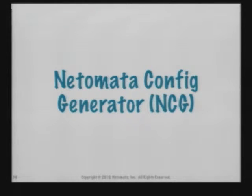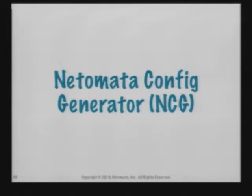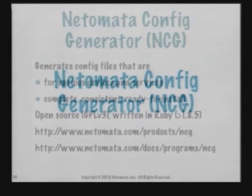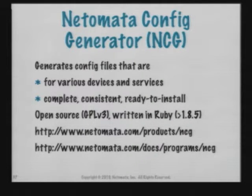I'm going to talk briefly about NCG — what it is, what it does, why it might be interesting. Then I'll go back to automation in general, and at the end of this talk, with whatever time I have left, I'll go into more detail about NCG. I didn't want to hijack this general talk into a sales pitch for my open source product. NCG generates config files for various devices and services — whatever devices and services you want to give it templates for — that are complete, consistent, and ready to install. NCG doesn't do anything about actually installing those configs; it just generates them. That's a big step forward for most organizations. It's open source, released under GPL v3, written in Ruby.